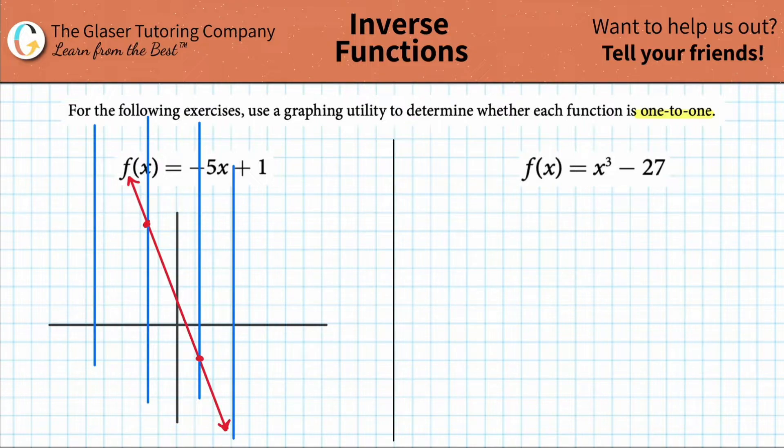If the vertical lines only intersect your function in one spot, right? So this vertical line only intersected it at that spot, and this vertical line only intersected it at that spot, then what that tells us is that the function that we drew in red is a one-to-one function. So the answer here is yes.